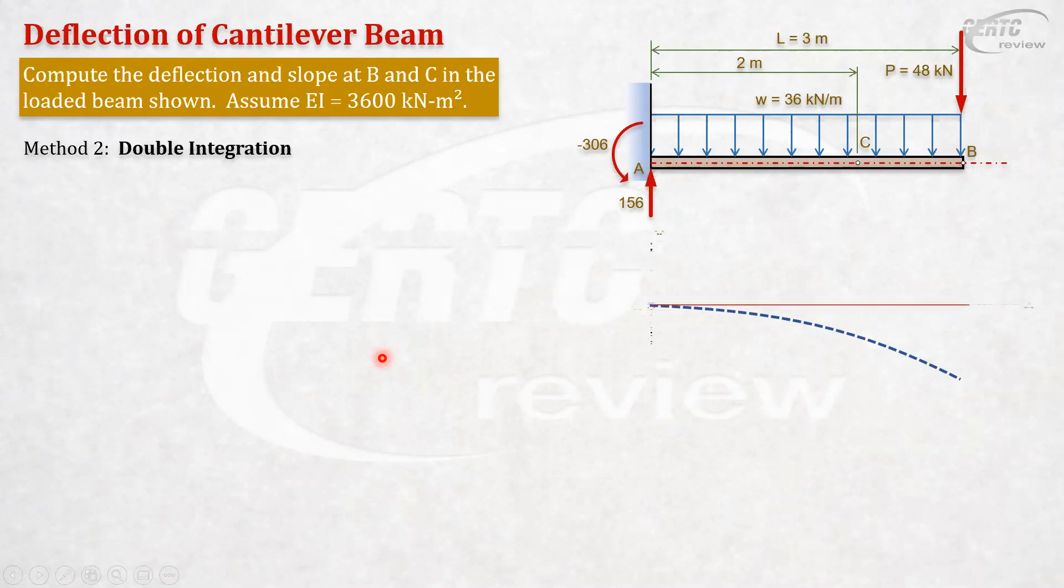Suppose we have here the elastic curve. Very important here is your origin. You have to set your x and y-axis. You can set the origin. Normally, most people like the origin as the point of support. Let's try that. Our origin is A. This is our 0,0, this is x, this is y, this is our elastic curve.